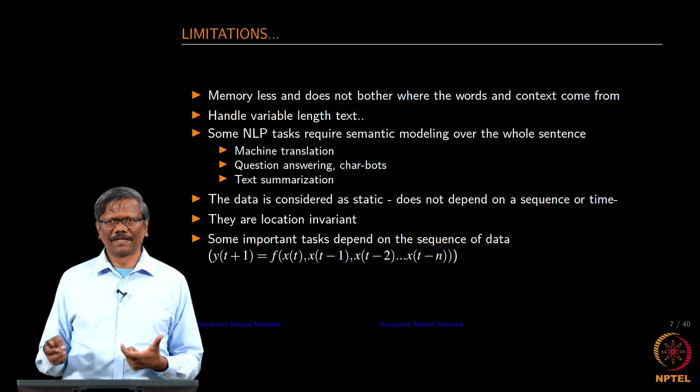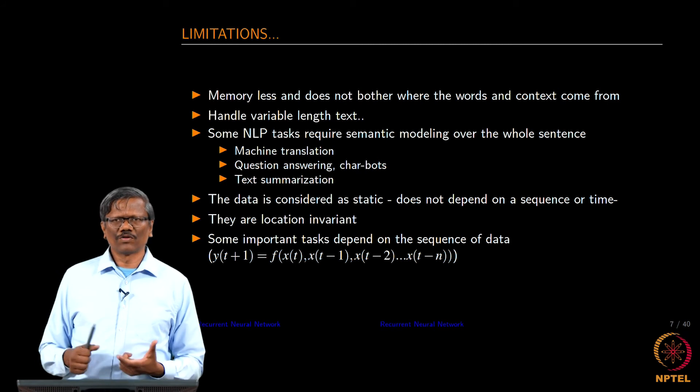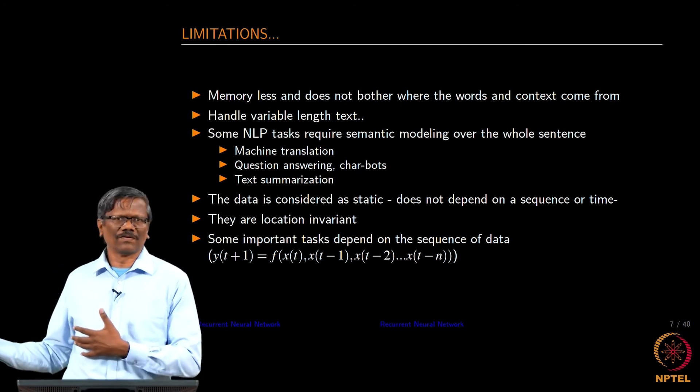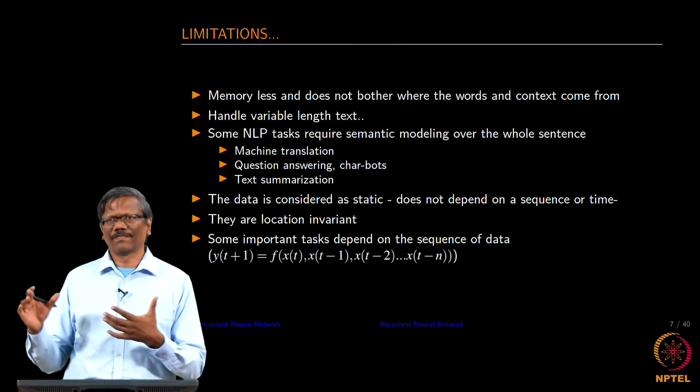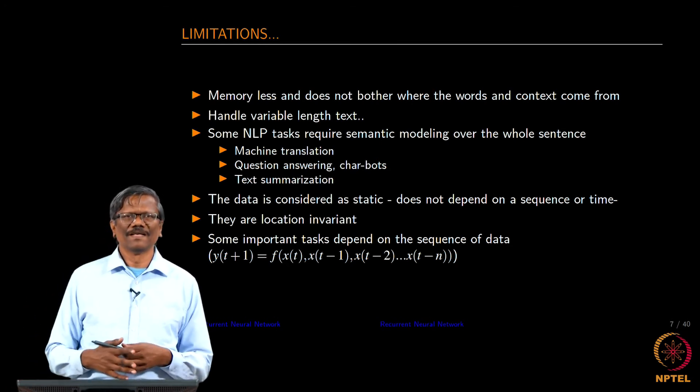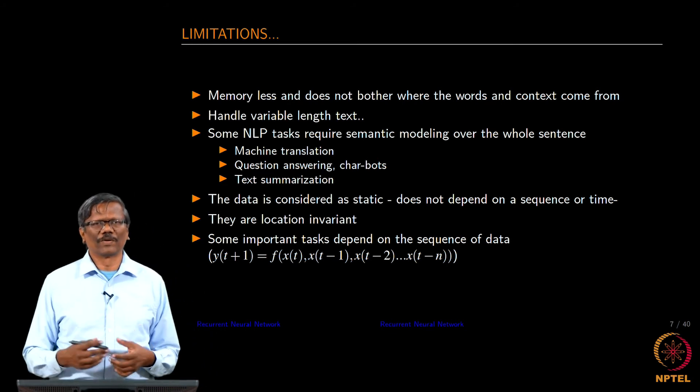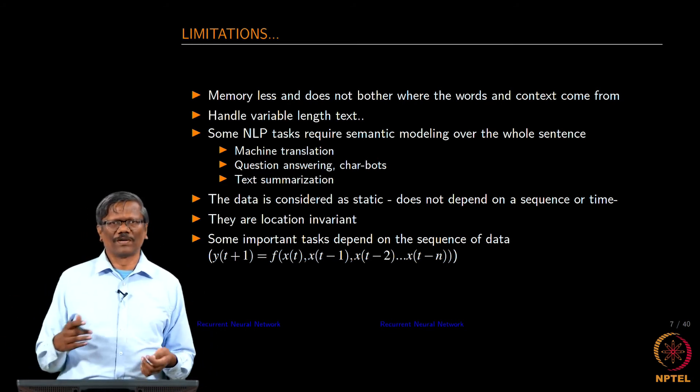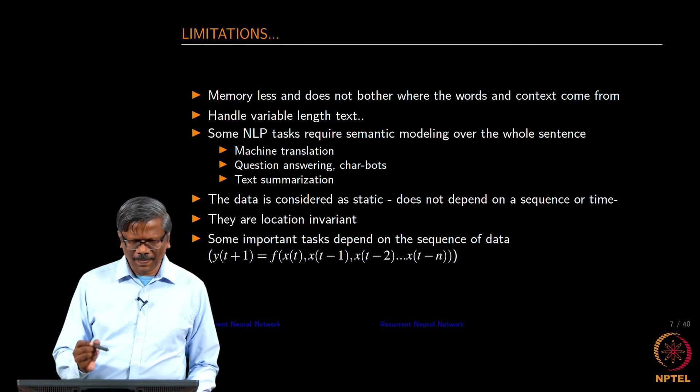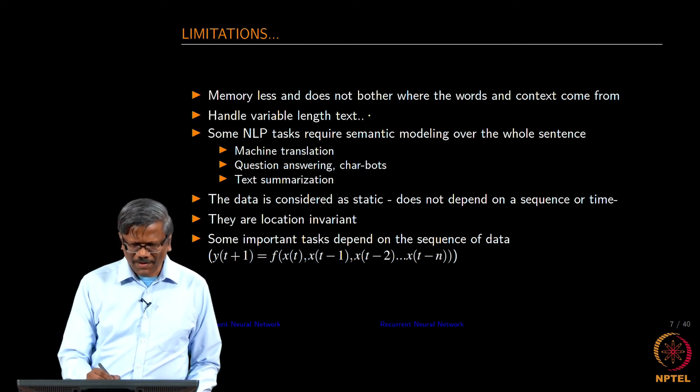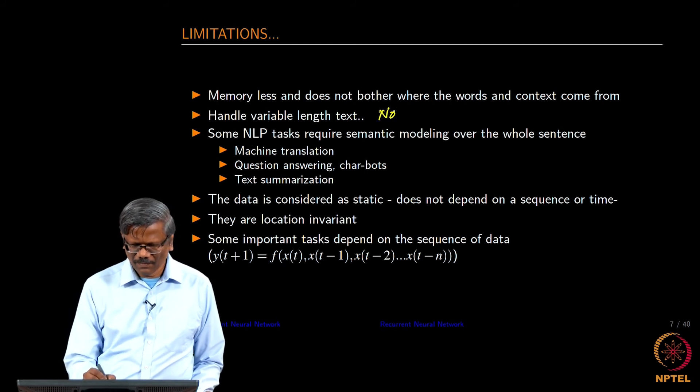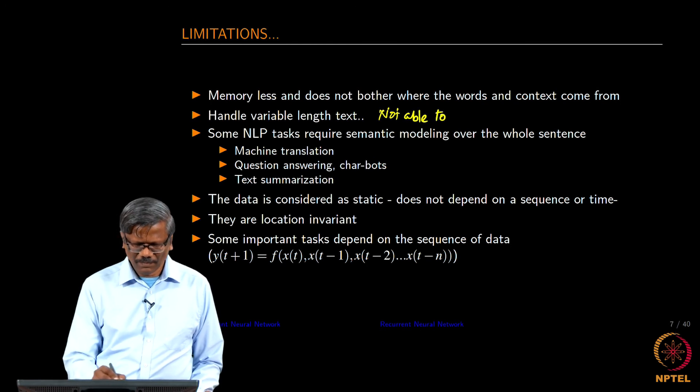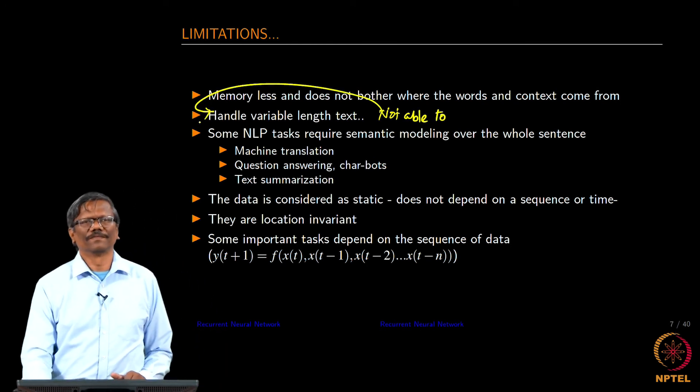We do not also really bother where these words came from. For example, if I train a word in the skip gram model, the word could be in the start of the sentence, middle of the sentence or wherever it is and then the context could be appearing in so many different locations of the same corpus. We do not really bother about the location. We are not able to handle variable length text. If you want to do that we need to really change the architecture of the network that we have.